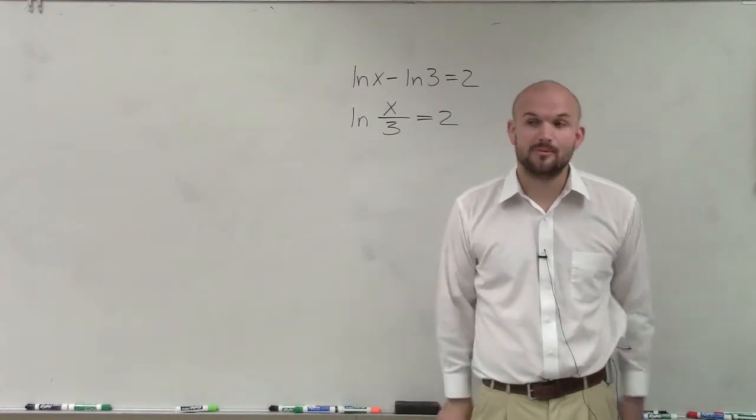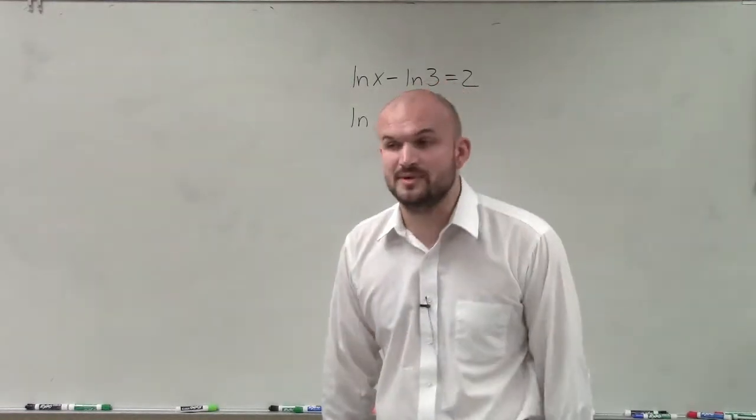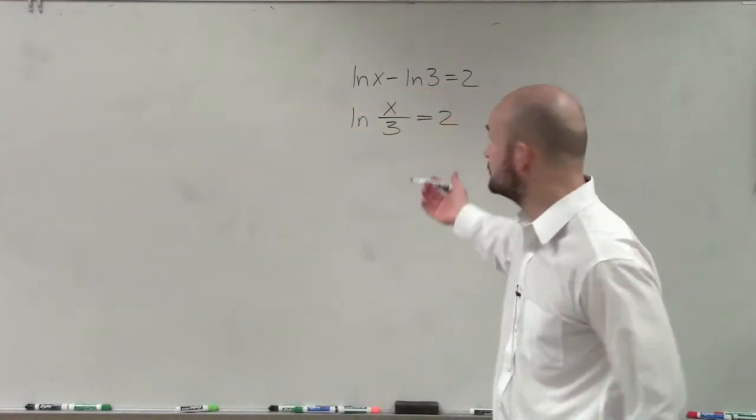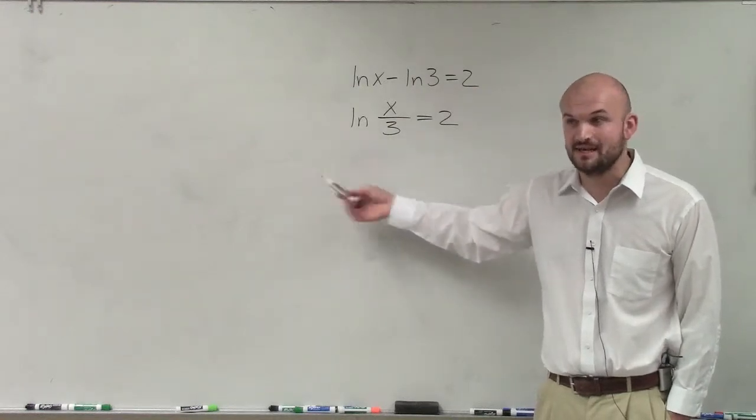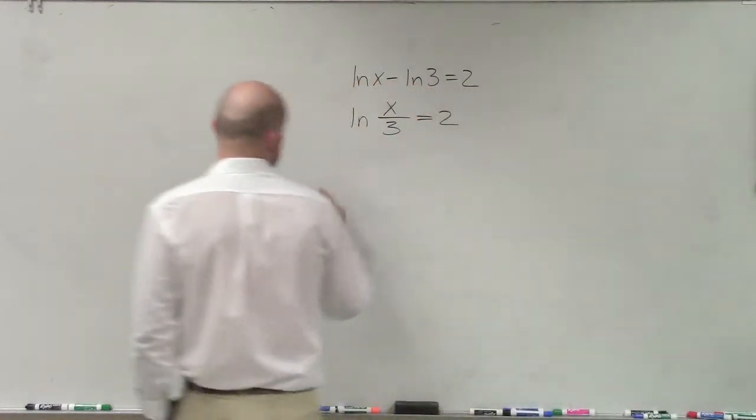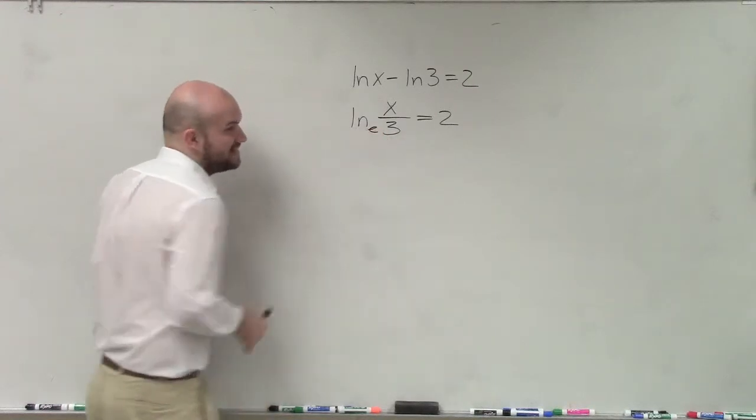So now, there's a couple different ways we could go about this. One of the ways we could do this, we could either just take the, we could either raise each one from a base e, or we could also just convert this to our exponential form. So remember, ln has a base e, right?